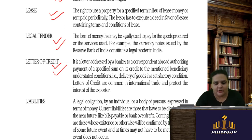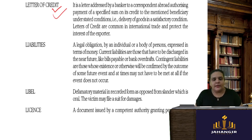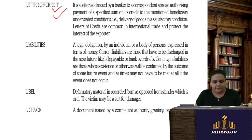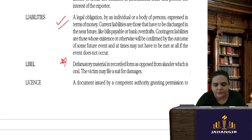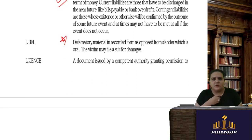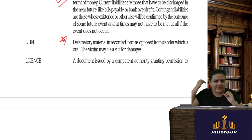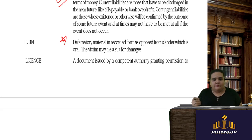Liabilities are legal obligations where money has to be paid — current liabilities and long-term liabilities such as bank overdrafts and term loans. Libel is defamatory material in recorded form, as opposed to slander which is oral. When you say something defamatory orally that is slander; libel is when you record it in writing, and the victim may file a suit for damages.